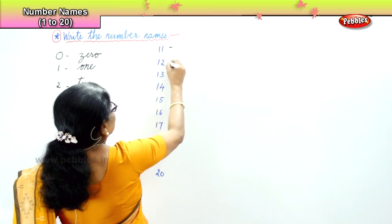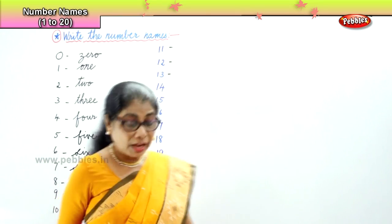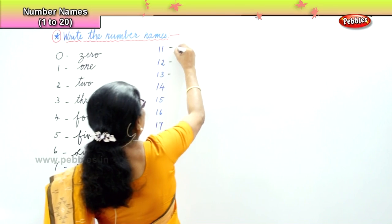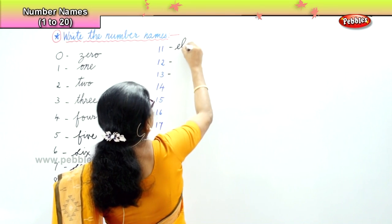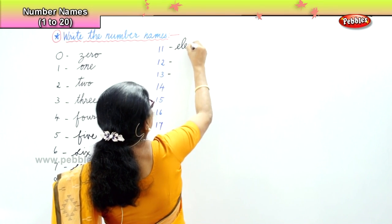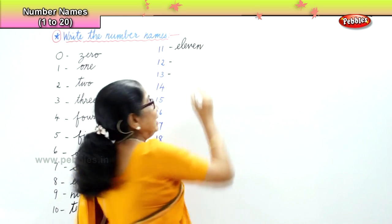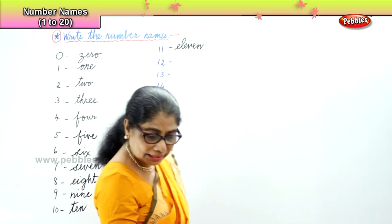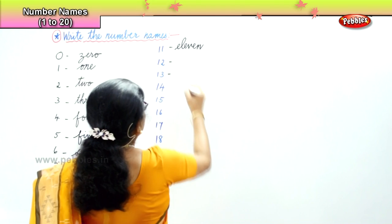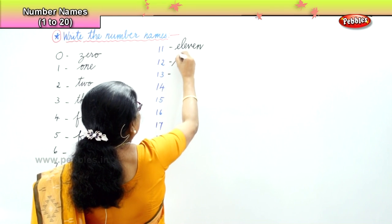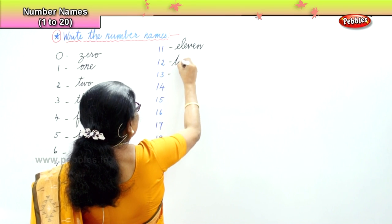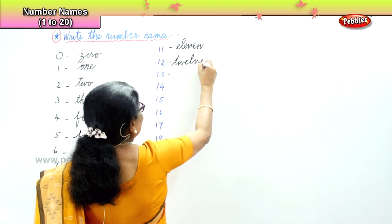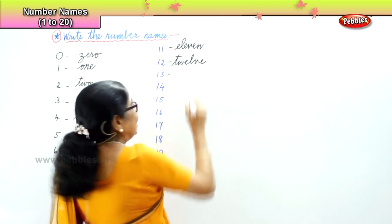First one: 11. How do you spell 11? E-L-E-V-E-N. 11. Next is 12 — T-W-E-L-V-E. 12. Very difficult. You have to write it several times.